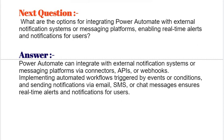Next question: What are the options for integrating Power Automate with external notification systems or messaging platforms, enabling real-time alerts and notifications for users? Power Automate can integrate with external notification systems or messaging platforms via connectors, APIs, or webhooks. Implementing automated workflows triggered by events or conditions, and sending notifications via email, SMS, or chat messages ensures real-time alerts and notifications for users.